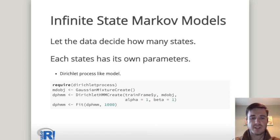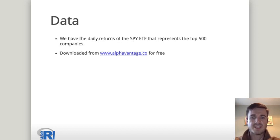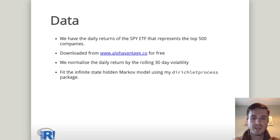Each state has its own parameters and it is a Dirichlet process type of model. This means we can use my Dirichlet process package to fit these types of models very simply, and in just three lines of code you can start fitting these models on your own data. For this application we have the daily returns of the SPY ETF, which represents the top 500 US companies and is a good representation of the stock market. You can download this data from Alpha Vantage for free, and after downloading we normalize this data by the daily 30-day rolling volatility.